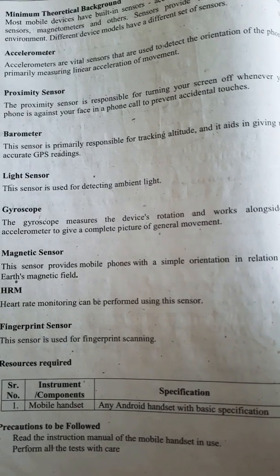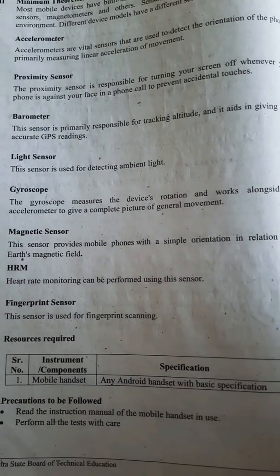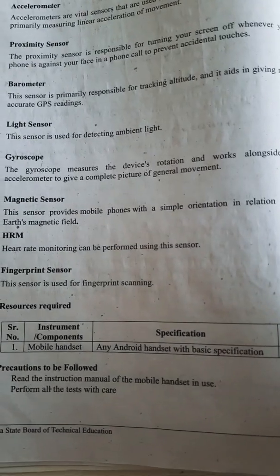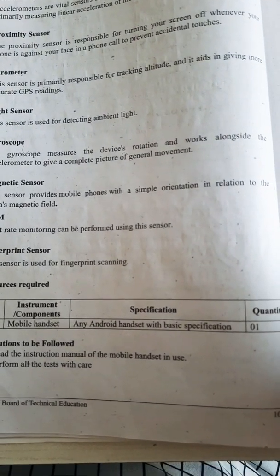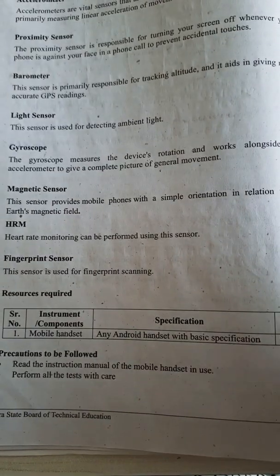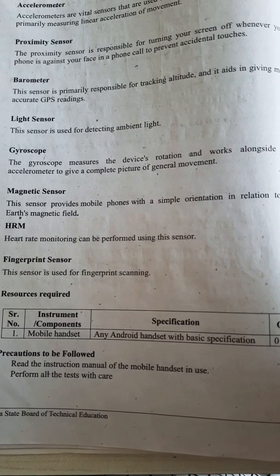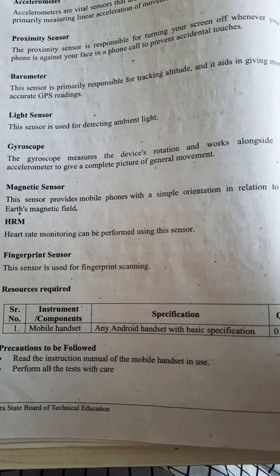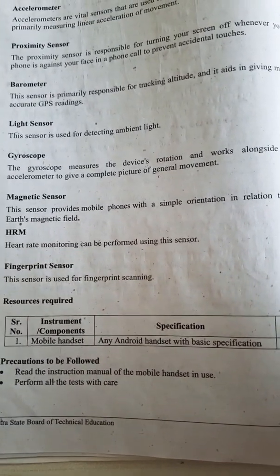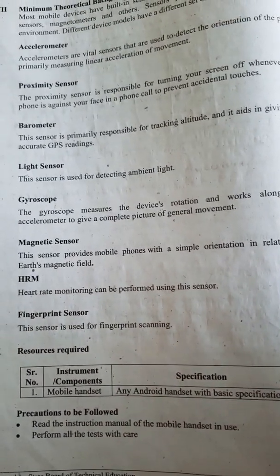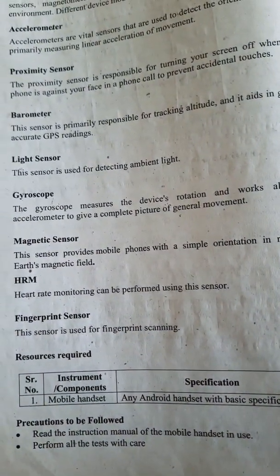GPS in your phone uses the barometer sensor. The light sensor detects the ambient light. The gyroscope measures the device rotation and works alongside the accelerometer. The magnetic sensor gives orientation in relation to the Earth's magnetic field. The heart rate monitor is used to monitor heart rates, and the fingerprint sensor — which most phones have nowadays — is used to unlock and lock the screen.